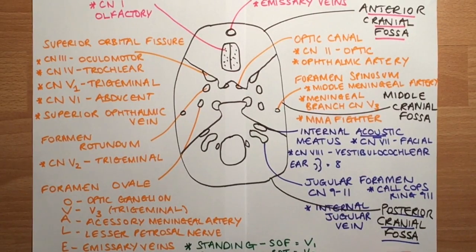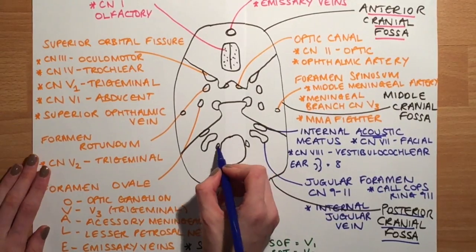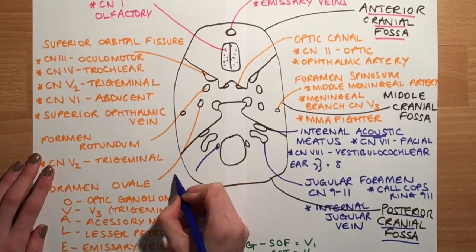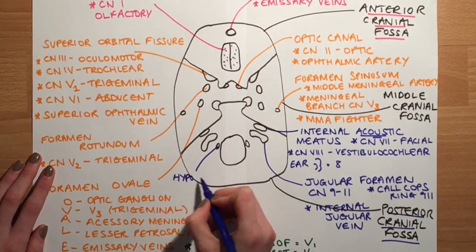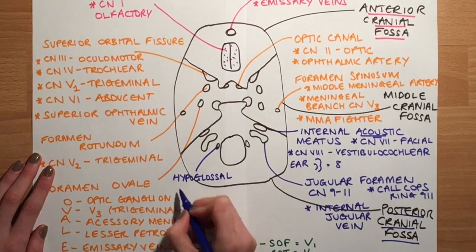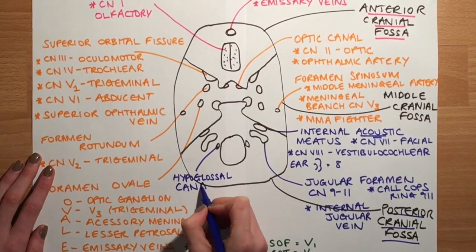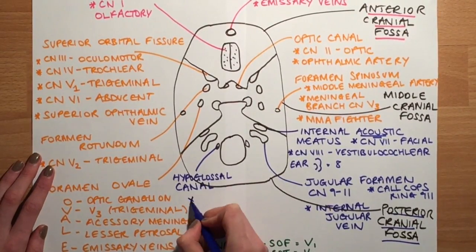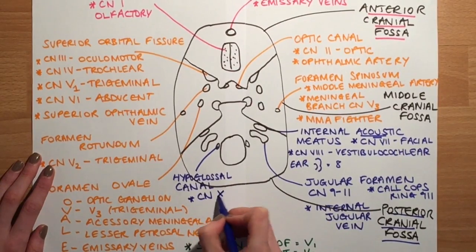Next we look at the hypoglossal canal, which is found either side quite close to the foramen magnum. It transmits only one cranial nerve: cranial nerve twelve, the hypoglossal nerve.